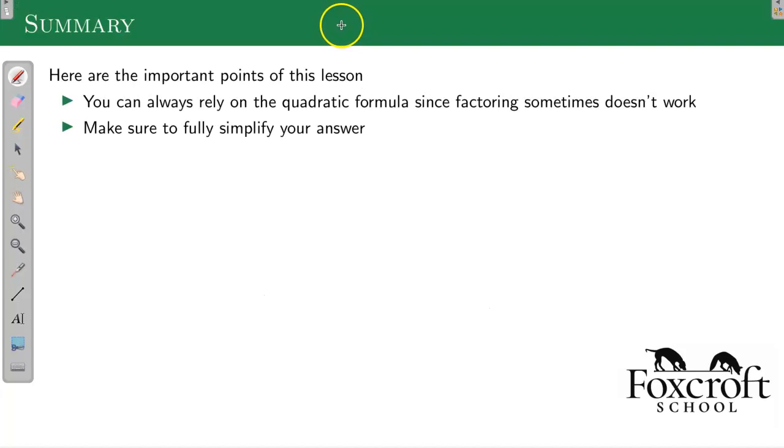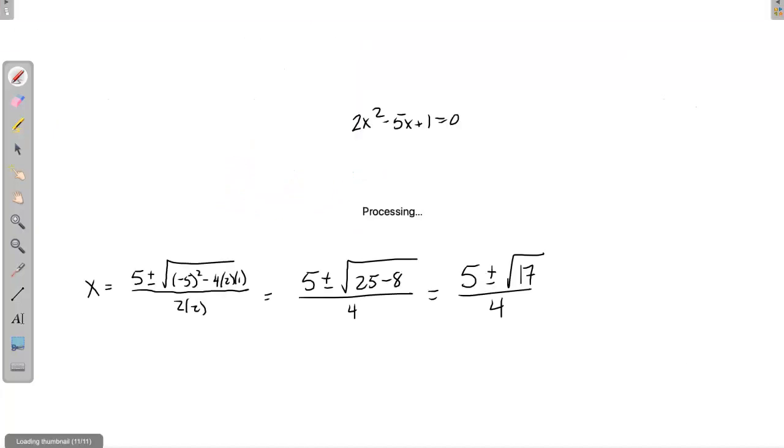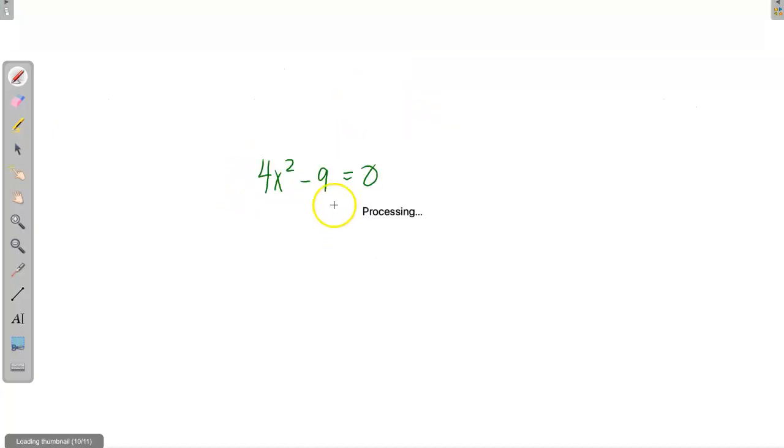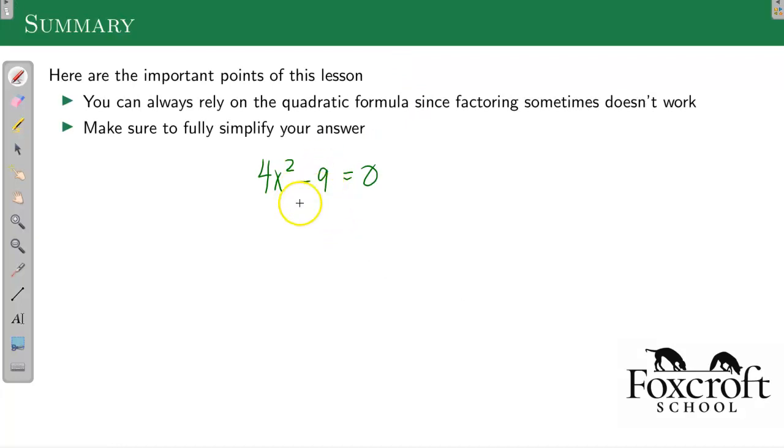In summary, you can always rely on the quadratic formula since factoring sometimes doesn't work. If you do the quadratic formula for every problem, I'm not going to yell at you. In my opinion, it's just more steps. So if I can factor, I would factor first. Make sure to fully simplify your answer. There's actually one thing I didn't include in this video, which is another strategy. Sometimes you'll see an x squared and you won't see an x term. If there's not an x term, you also have another option. You can still do quadratic formula, you can still factor this, but you also have another option of trying to solve it with square roots.